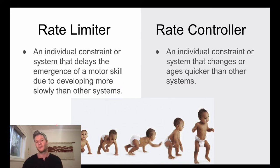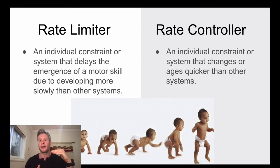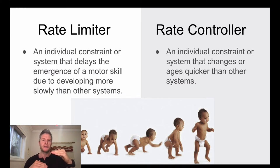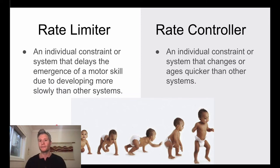A good example is walking. As a rate limiter: a toddler might have enough muscular strength to walk — they've been crawling and have lots of leg strength — but the system holding them back is balance. They don't yet have the capacity to coordinate or balance, so balance holds back the ability to walk even though the strength is there. Once they develop that balance, then they can walk.